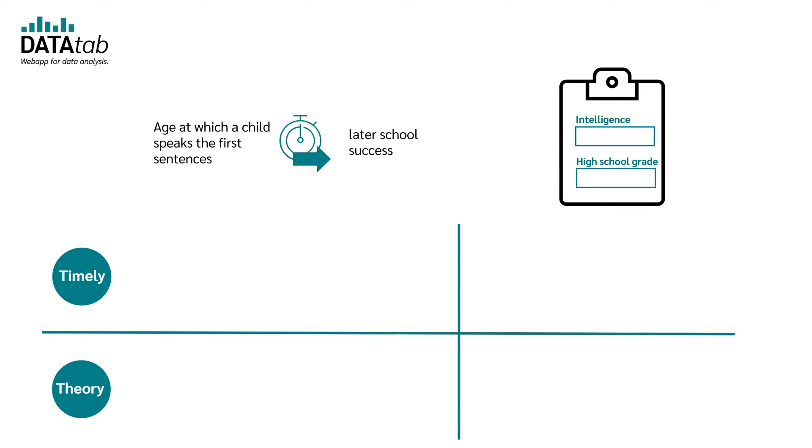Let's take a look at our example again. In the first example, where the question is whether the age at which a child speaks the first sentences influences later school success, there is clearly a temporal component. The measurement of when the first sentences are spoken is clearly before the measurement of later school success. The relationship cannot be the other way around. If one has great school success by a lot of tutoring, this has of course no influence on when the first sentences are spoken.